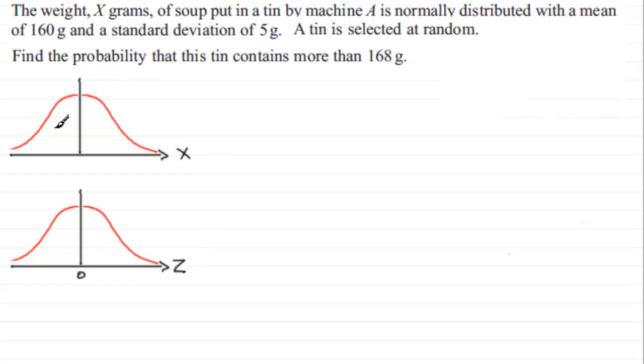So we've got this distribution here, X is already defined as being a normal distribution. We're told that it's got a mean of 160 grams, so that's the first parameter there. And then a standard deviation of 5 grams. And the second parameter is always the variance, the standard deviation squared, in other words. So you could either write 5 squared or you could write 25, that's up to you.